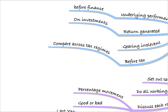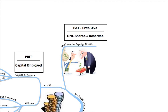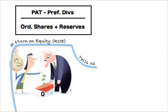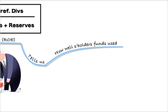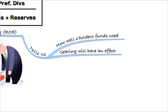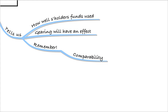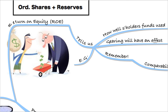Return on equity: profit after tax less preference dividends — remember that's distributable profit — over ordinary shares plus reserves, and that's the equity of our investors. This really tells us how well the shareholders' funds are being used. How well are you using those shareholders' funds? Gearing will have an effect on the ROE. And remember, you can only compare with the same company year on year or industry averages.